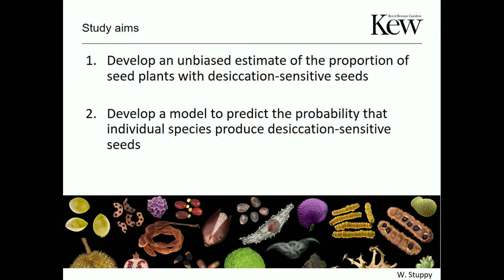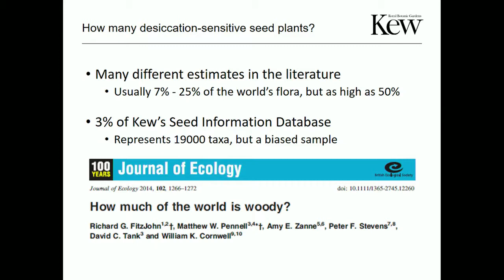Estimates in the literature range from around 7% to about 25% of the world's seed plants. Within Kew's seed information database, we've got information about 19,000 taxa, and about 3% are desiccation-sensitive — but we know this is biased towards desiccation-tolerant species.